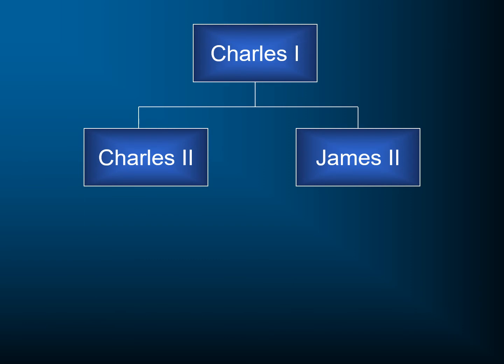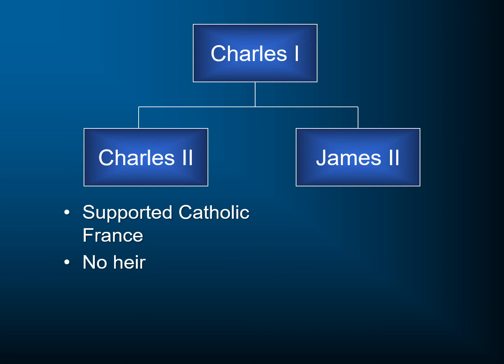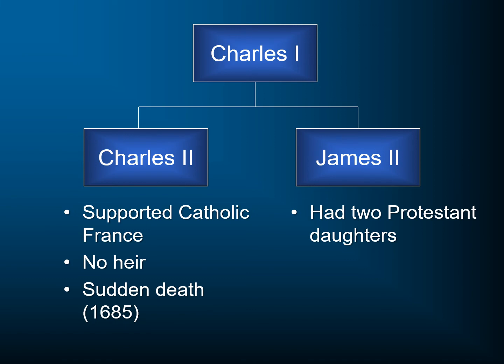Charles II becomes king, supported by Catholic France, but he has no heir. When he dies in 1685, the crown goes to his brother James II. James II becomes king, and even though he's Roman Catholic, he has two Protestant daughters. The people figure they can wait him out — when he dies, the crown can go to one of those Protestant daughters. However, his wife then gives birth to a son, and that changes everything.